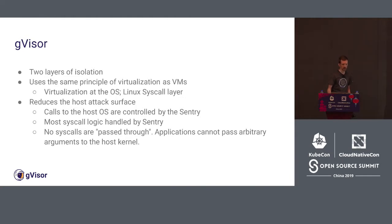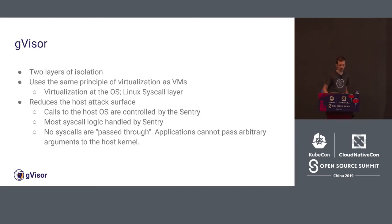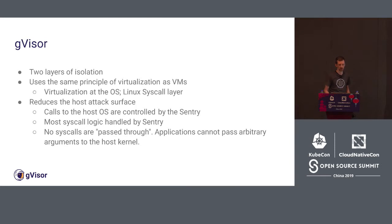This gives us two layers of isolation. It uses the same principle of virtualization as VMs but at the OS level rather than the hardware level. This reduces host attack risk by reducing the number of syscalls handled by the actual host kernel. Syscalls sent to the host kernel are managed by the first layer of isolation — the user-space sentry — so you'd have to break out of user space and find a bug in the sentry before you could send any arbitrary syscalls to the kernel. And you're limited to a vastly reduced set of syscalls compared to what a normal application needs.